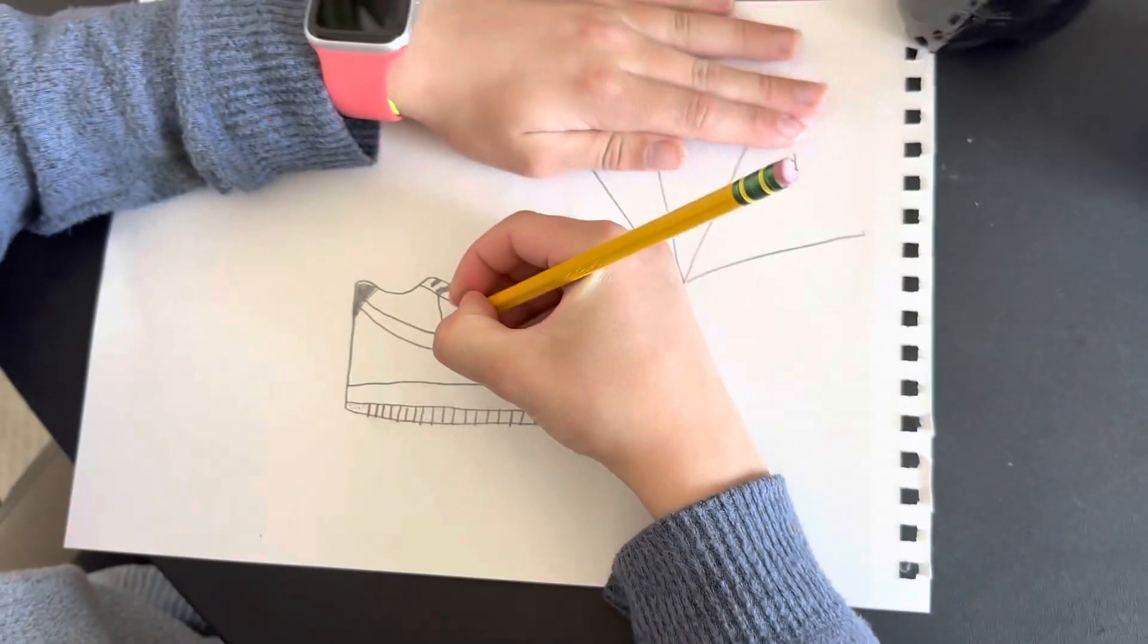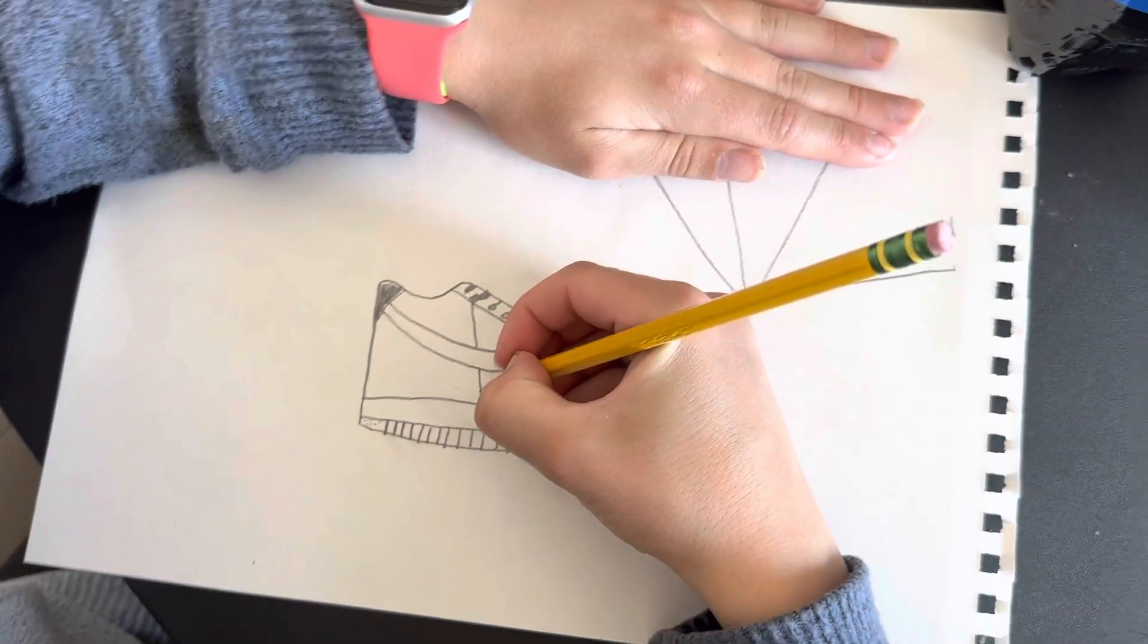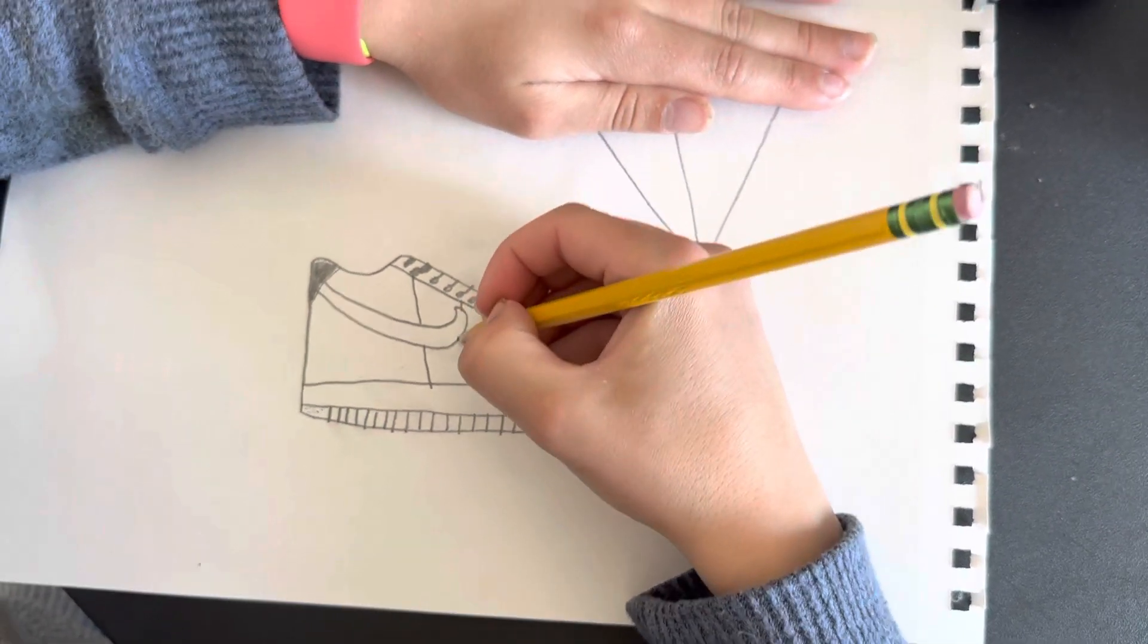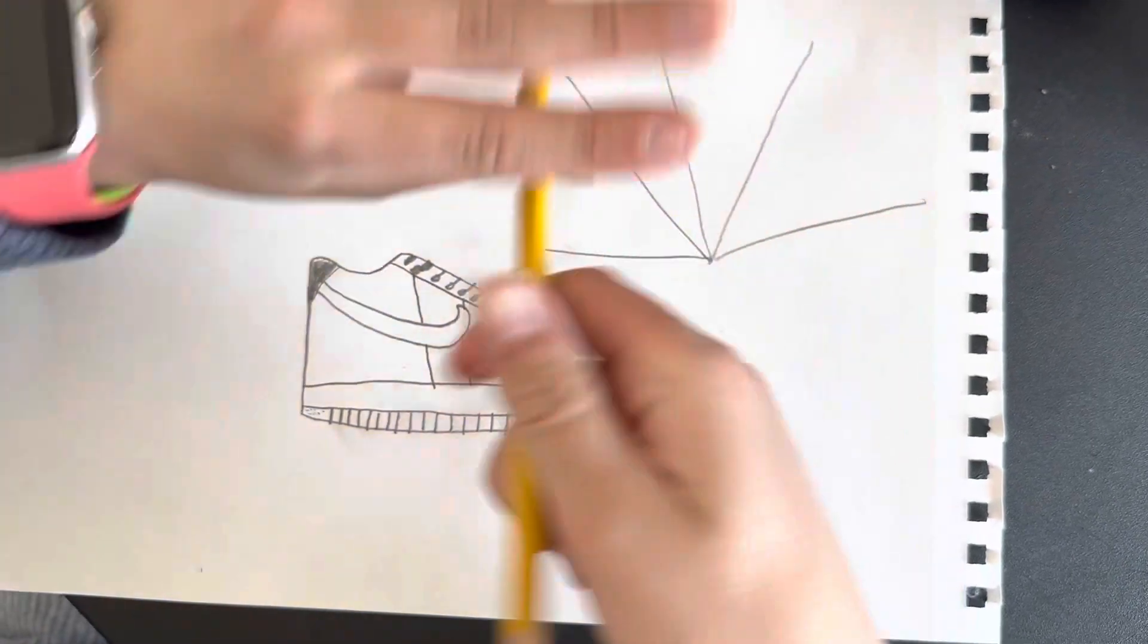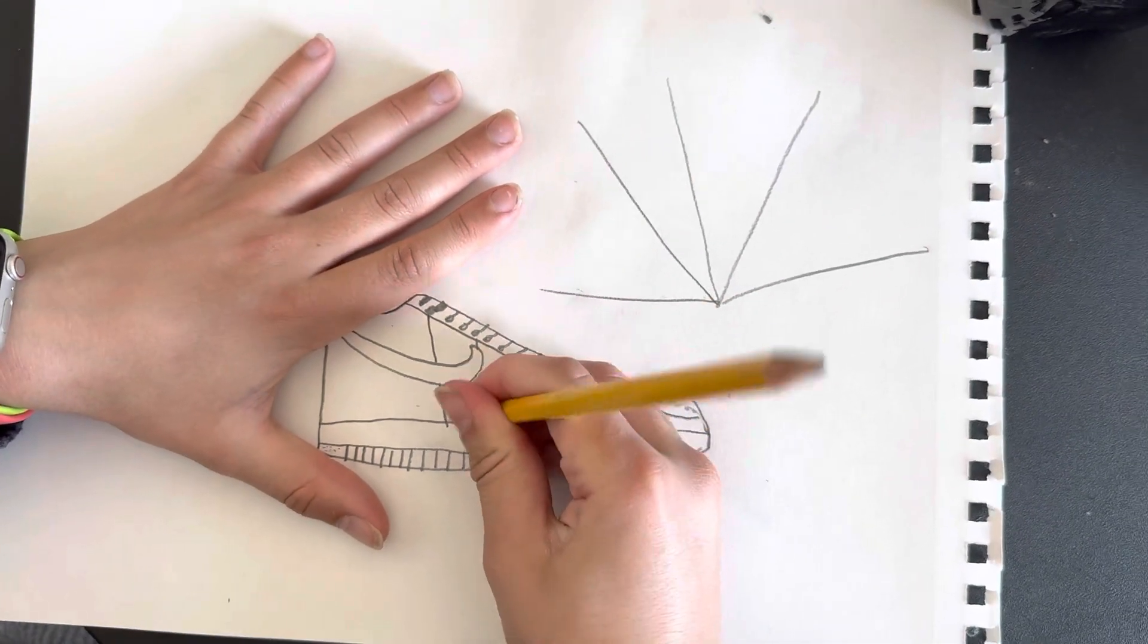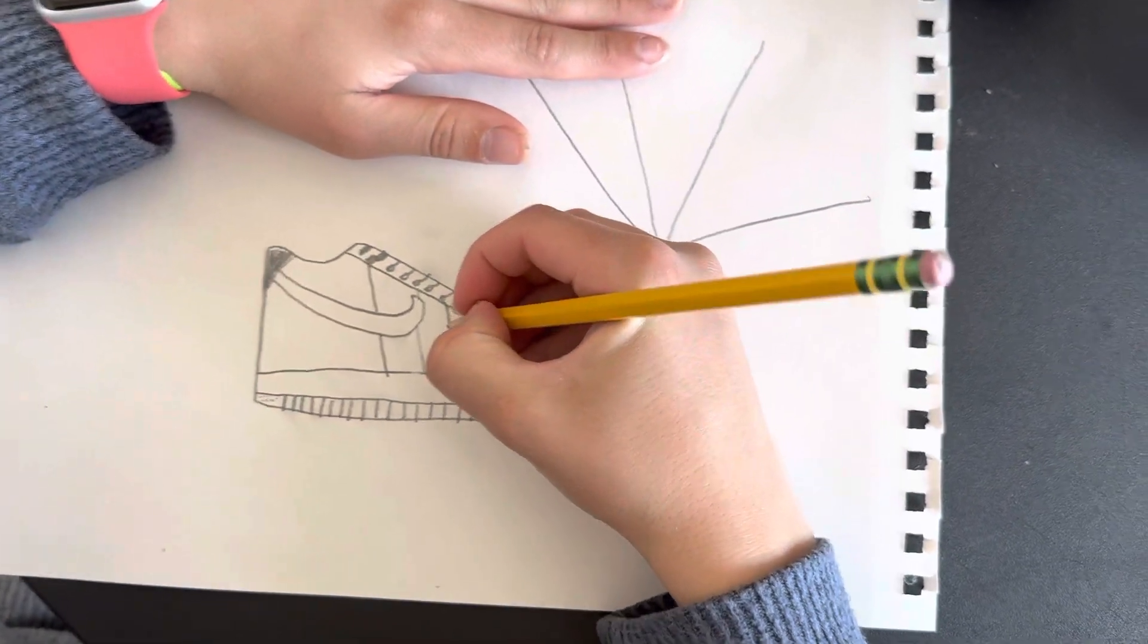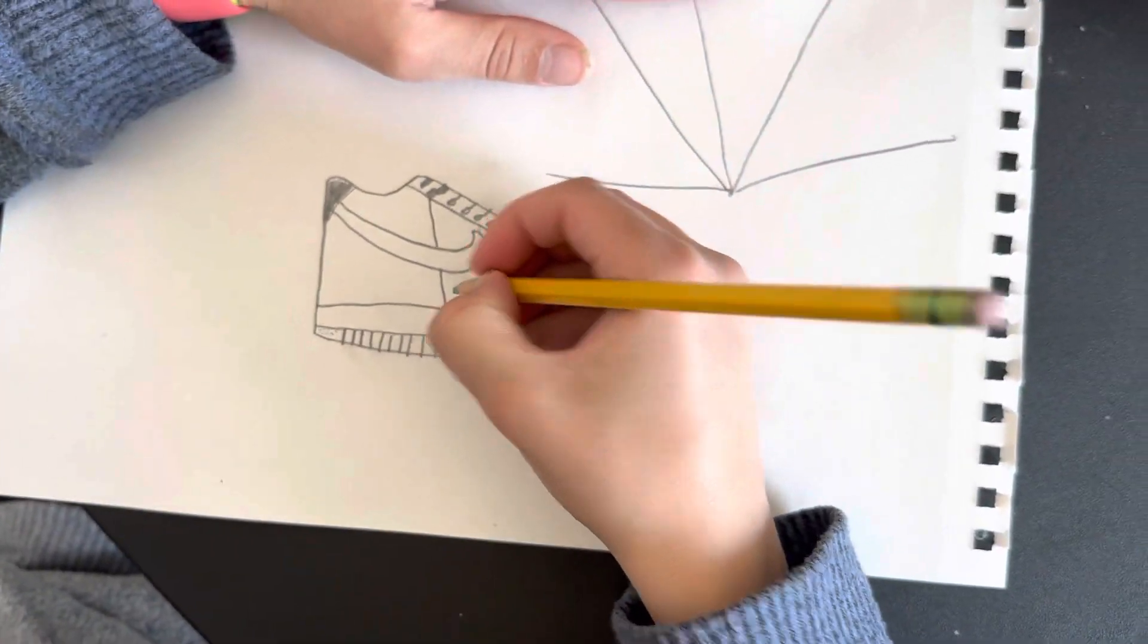So then you gotta draw one line and line, line. I think I'm gonna erase this and make it a little bit bigger. You gotta add the two stitching holes right there.